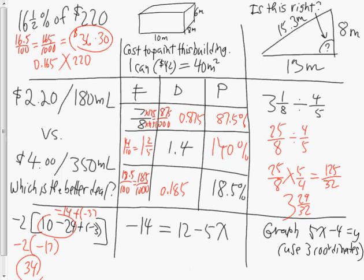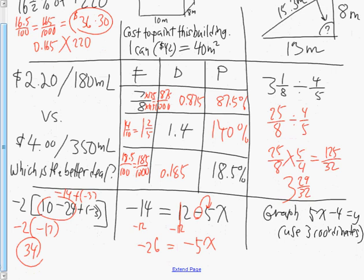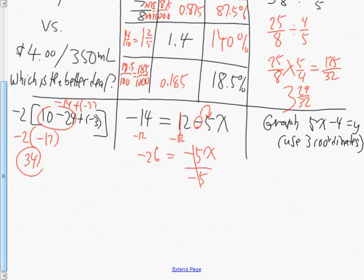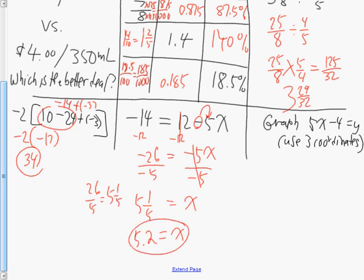In the eighth question we have algebra. I'll get rid of the constant first by subtracting 12 from both sides, giving negative 5x equals negative 26. It's really important to keep the negative sign with the variable. Dividing both sides by negative 5, we get x equals 26 over 5, which is 5 and one-fifth — positive because a negative divided by a negative is positive — or equivalently 5.2.